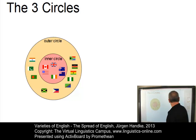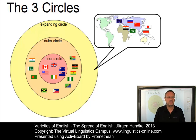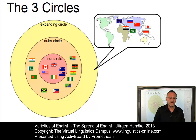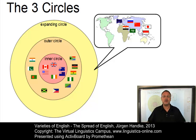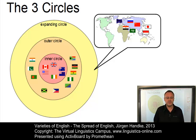The countries in the expanding circle did not institutionalize English as an official language but recognized the importance of English as a foreign language. This concerns almost the whole world — countries such as Israel, Japan, China, Egypt, Korea, Nepal, Russia, Taiwan, Indonesia, Zimbabwe, Saudi Arabia, the whole of Western Europe, plus Caribbean countries and the South African continent, with more than one billion speakers.